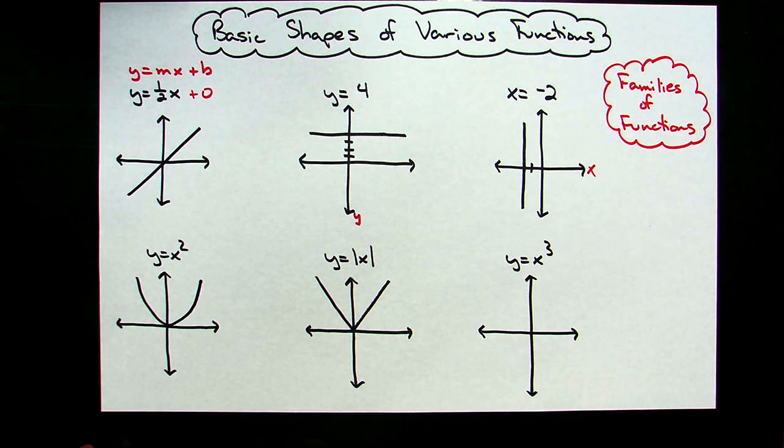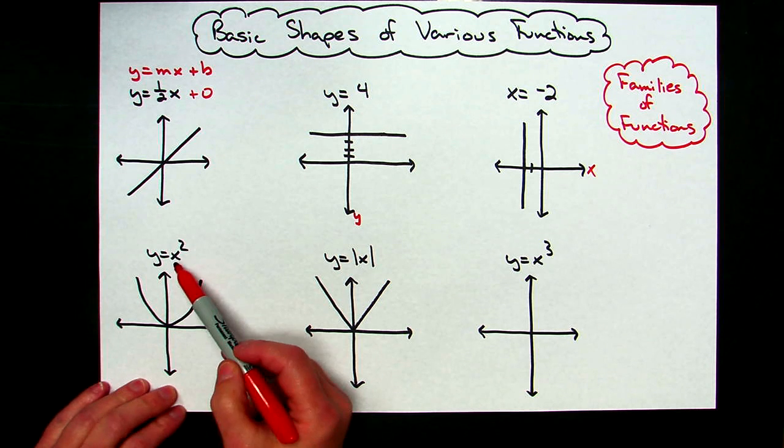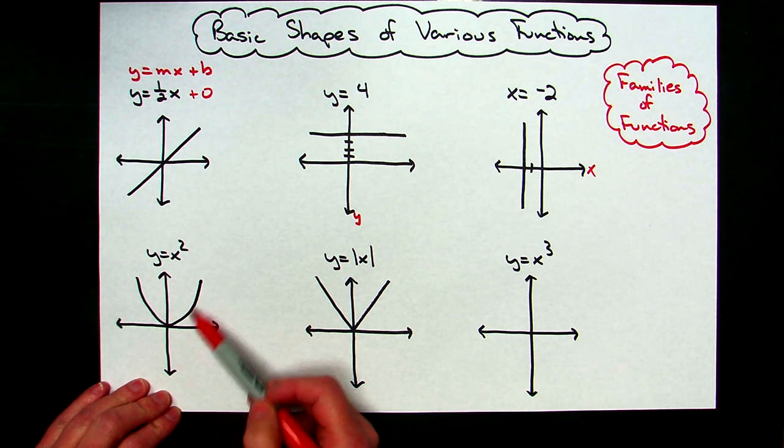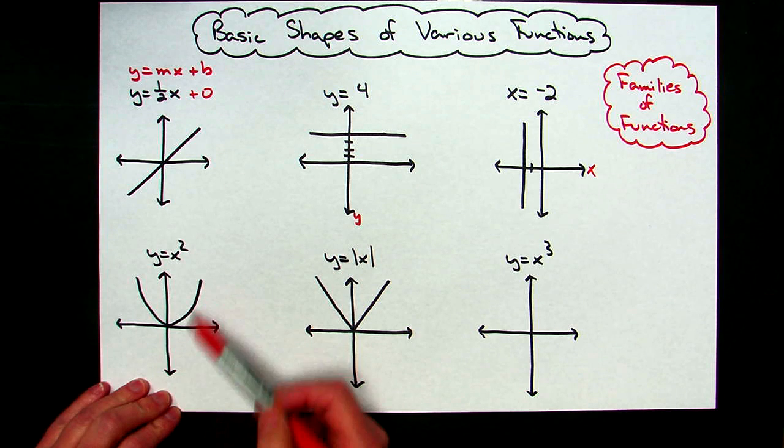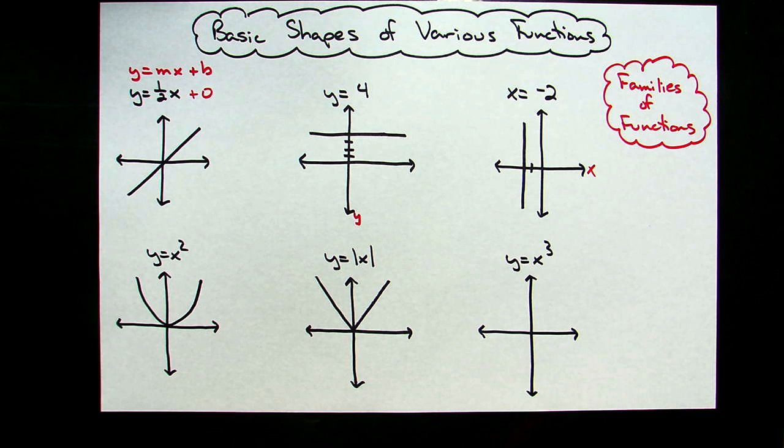That pretty much takes care of your linear equations. Now if we come down here and we take a look at an equation with an x squared, all x squareds are going to be some type of parabola or quadratic. Could be upright, could be upside down, but basic x squared is a quadratic.